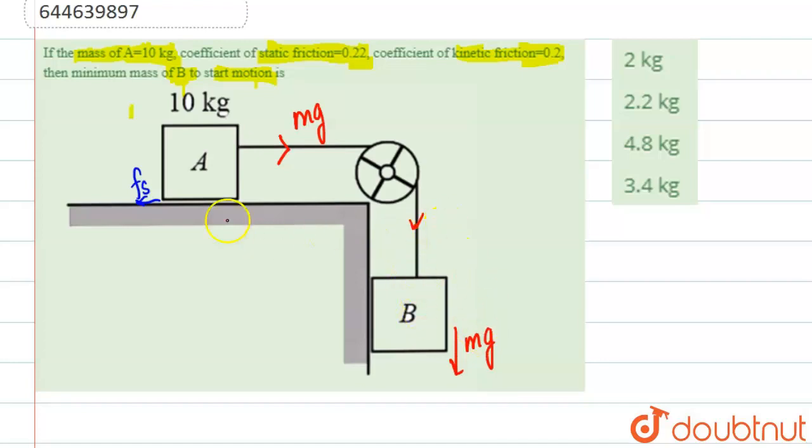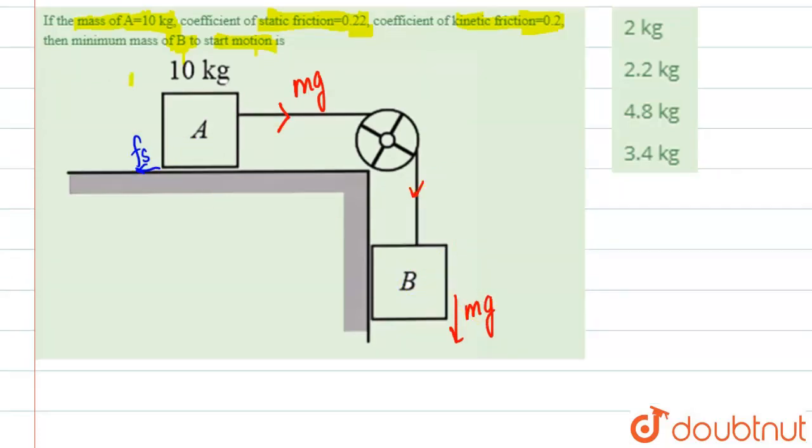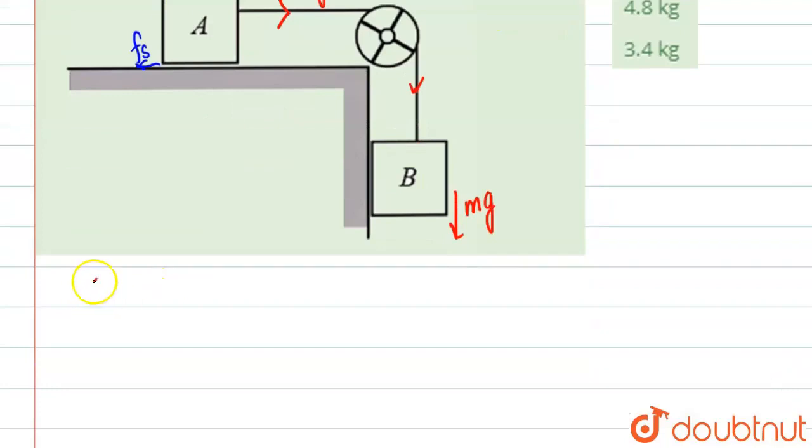So fs must be equal to mg. If you see, fs must be equal to mg in order for this block to move. Basically, it must be greater than or equal to mg, so we're just taking equal to mg for now.